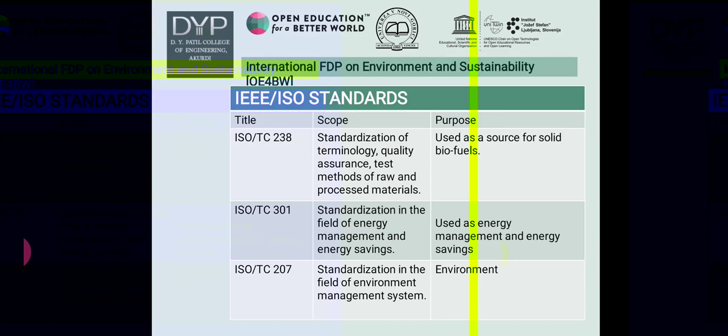The purpose of ISO/TC 238 is its use as a source for solid biofuels. ISO TC 301 covers standardization in the field of energy management and energy savings, used for energy management and energy savings. ISO TC 207 covers standardization in the field of environment management systems.